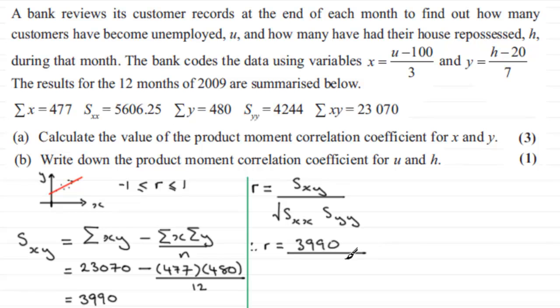We're dividing this by the square root of the product of S_xx and S_yy. So S_xx is 5606.25, put that in brackets, and we're multiplying this by S_yy which is 4244. We're expecting a result that lies between -1 and 1 inclusive, so if we don't get something like that, we know we've done something wrong.